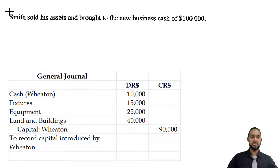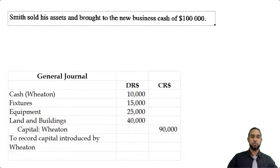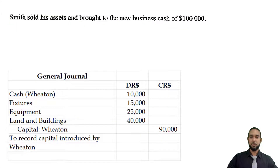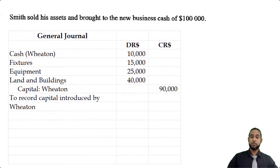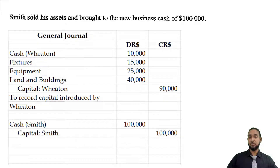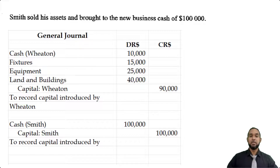For Smith, we're going to debit cash $100,000 and credit capital $100,000, because Smith sold his assets and brought to the new business cash of $100,000. The narration is: to record capital introduced by Smith.